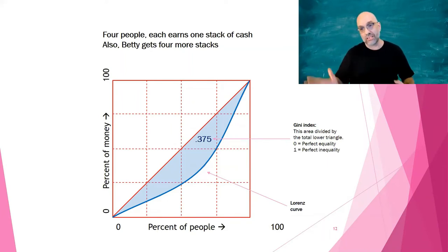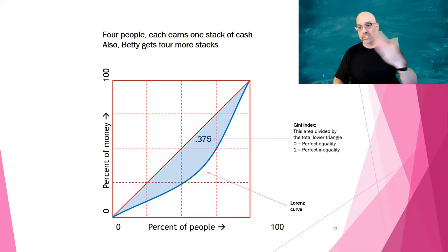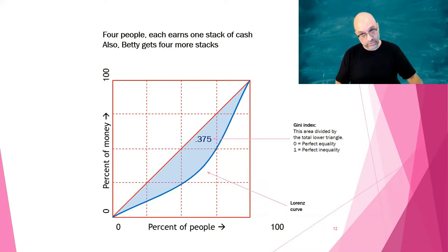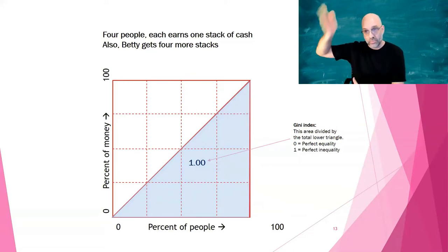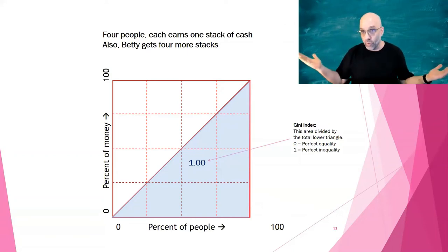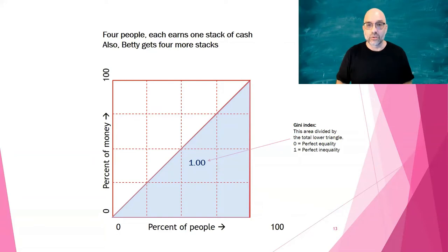The Gini index is the percentage of that whole lower right triangle that's above the line. If the blue line and the red line totally match — perfect equality — it's 0. On the other hand, if Betty had all the money and the 99% of people before her had zero, it would be 1, because the entire lower right triangle would be above the blue line. So our Gini index goes from 0 to 1, or from 0 to 100 depending on how you scale it.